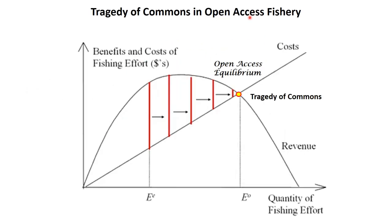Open Access Equilibrium is very common for open access fisheries, and that point is also called the Tragedy of the Commons. After the profit maximization point, fishermen think: if we increase our effort and go more fishing, we will gain much more profit. But in reality, they are not gaining more profit, and when cost equals revenue — zero profit — that point is called the Tragedy of the Commons.